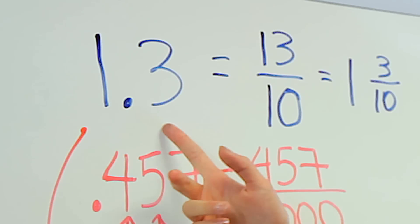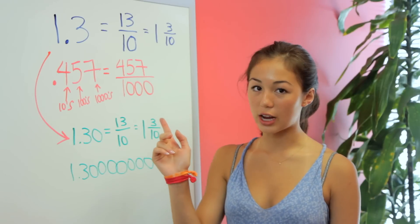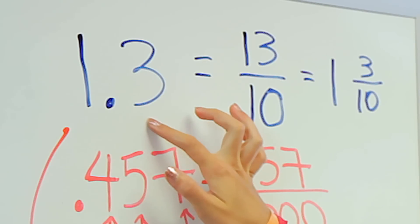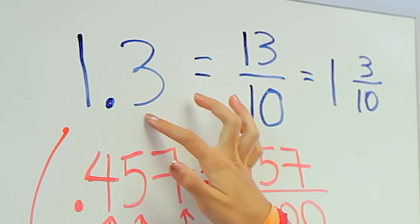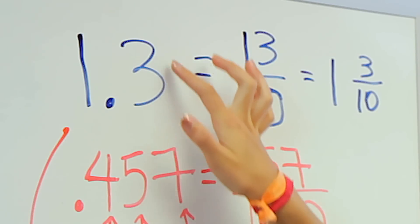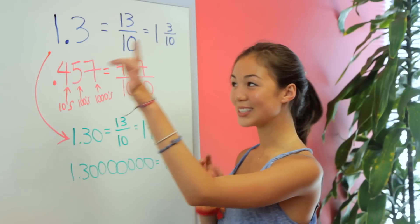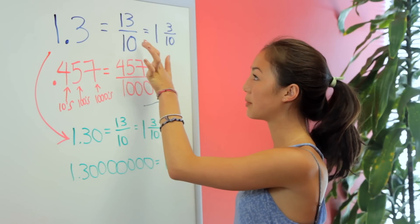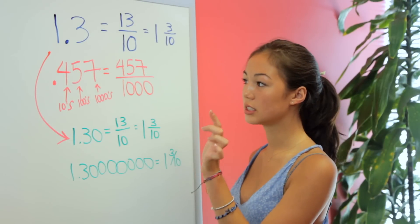Here we have 1.3. And to turn this into a fraction, we're going to take the place of the last decimal, which is the tens place, and put this whole number over that. So we're going to have 13 over 10. And then we can simplify that to 1 and 3 tenths.